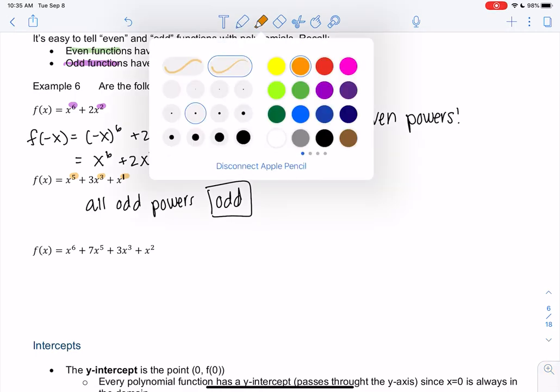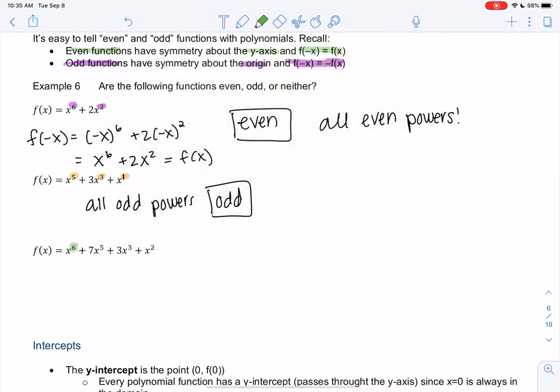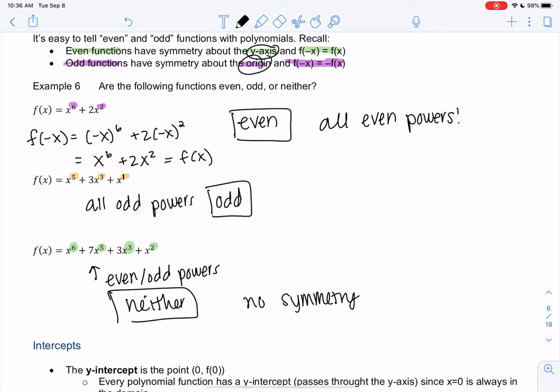So that's the shortcut for polynomials - all even powers gives an even function. All odd powers like x^5 + 3x^3 + x gives an odd function. And if we have a mix like x^6 + 7x^5 + 3x^3 + x^2, it turns out it's neither, which means no symmetry at least about the y-axis or the origin. This is a nice shortcut for polynomials.